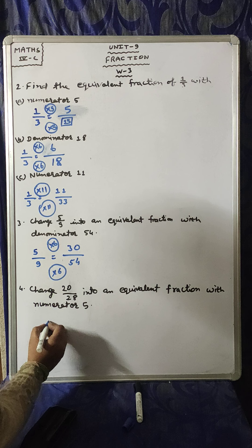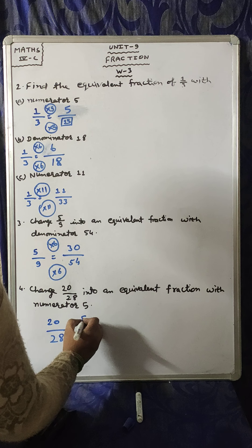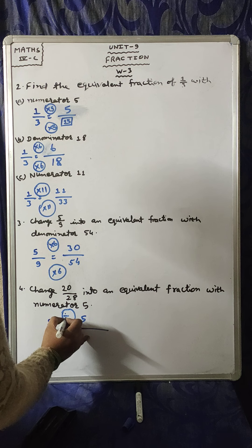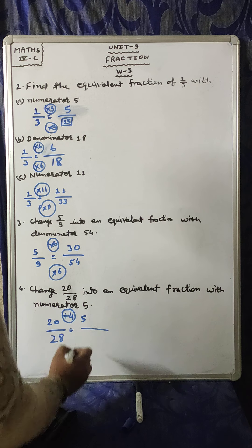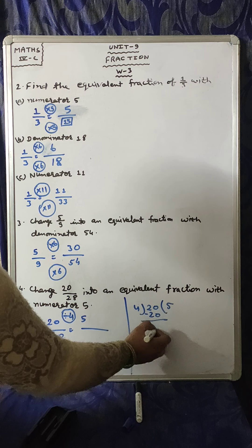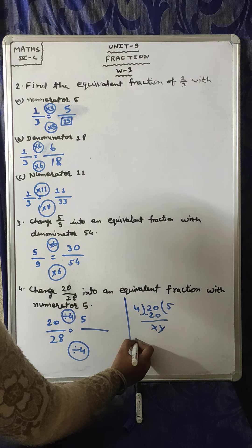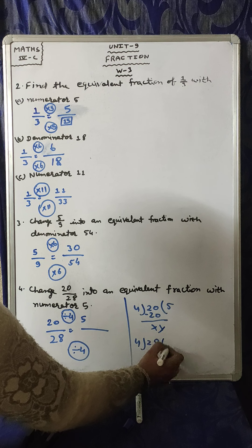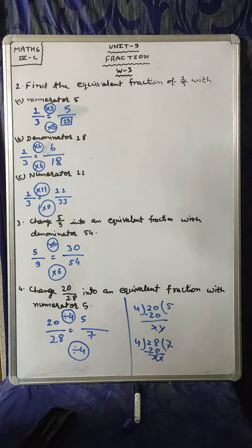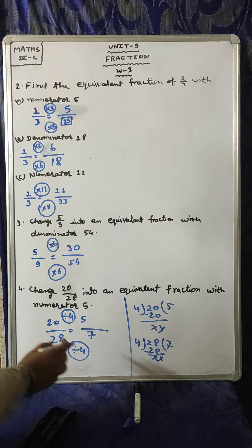Now, coming to question number 4. 20/28. We have to find out the denominator. 20 divided by 4 is 5. 4 times 5 is 20. 4 times 7 is 28. We will write here 7. 20 divided by 4 is 5, and 28 divided by 4 is 7. That's all for this worksheet.